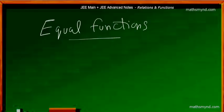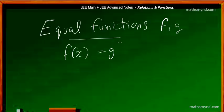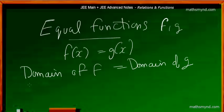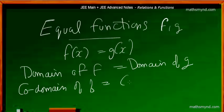What do we mean by equal functions? If you are dealing with two functions f and g, it simply means that f of x is equal to g of x, which means that the domain of function f is equal to the domain of function g. This naturally means that the co-domain of f should be equal to the co-domain of g.